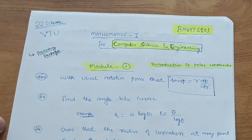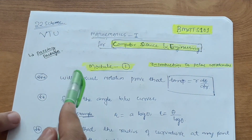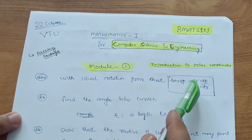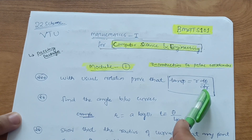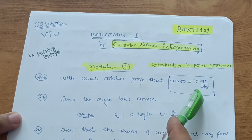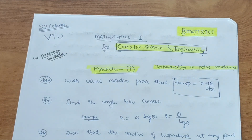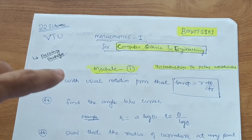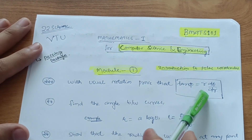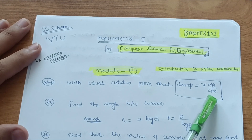Let's start without wasting time. In Module 1, you have to cover some theory concepts and derivations which are the most important ones. First, with the usual notation, prove that tan φ = r dθ/dr. This is one of the most important questions as far as the VTU examination is concerned. It was a definite question in the 18 scheme M1 as well, and the same trend will follow in the 22 scheme.